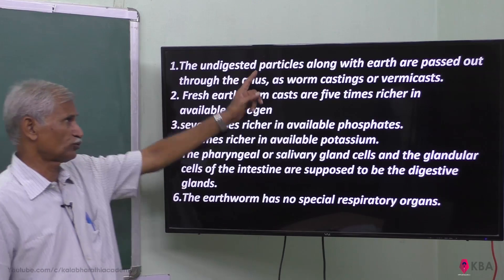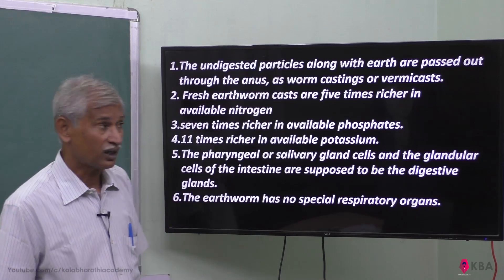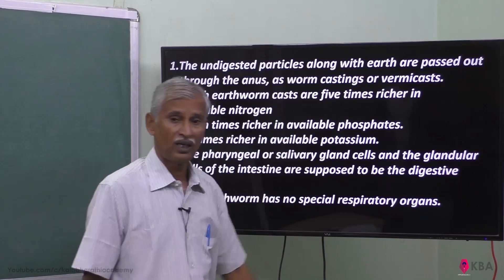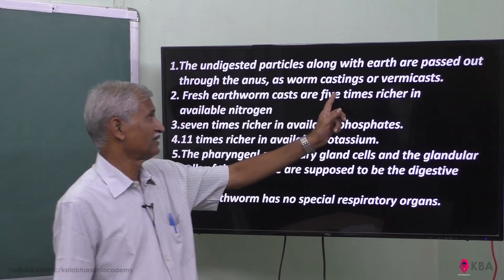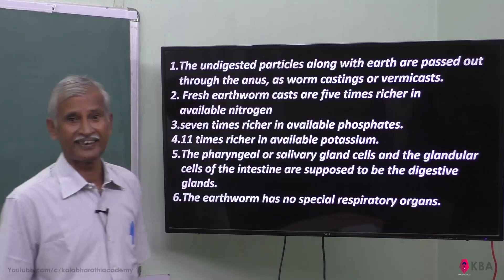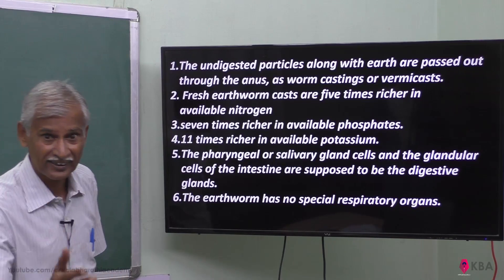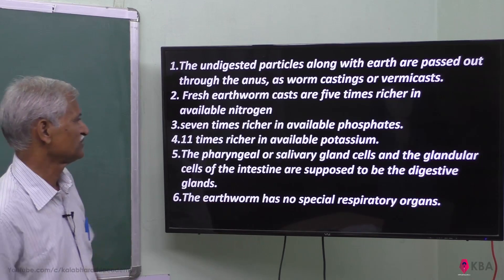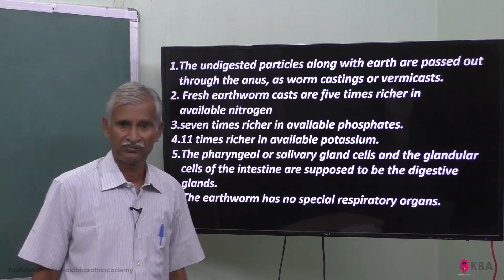Undigested food particles, along with soil and earth, are passed out. That is called the cast — worm castings, also known as vermicast.